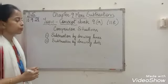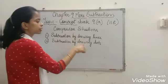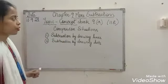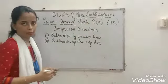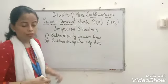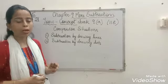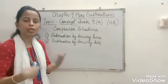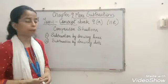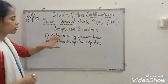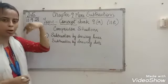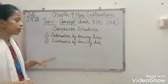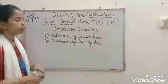These are the two matters we learned, and we solve word problems also. Now, by using one of the methods, today we will do concept check 9a. There are three word problems based on comparison situations. We learned these two methods in our previous class — subtraction by drawing lines and subtraction by drawing dots.